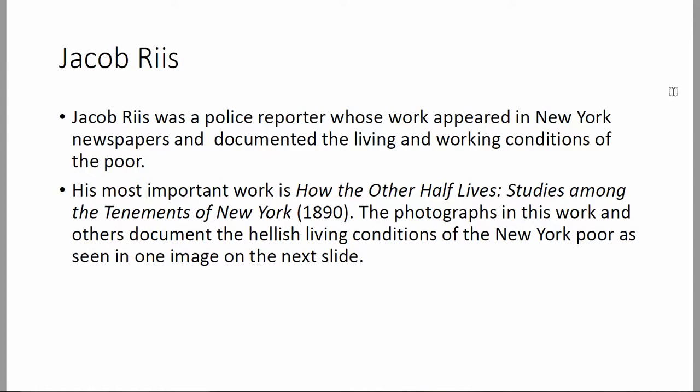Let's continue with part two of this first lecture. A number of the photographs you'll see in the remainder of this presentation come from an artist and police reporter who documented the conditions of the poor in New York in the 1890s. His name was Jacob Riis, and his most important and widely known book — which you can find all over the internet — is called 'How the Other Half Lives: Studies Among the Tenements of New York,' published in 1890. He documented the living conditions of these people.